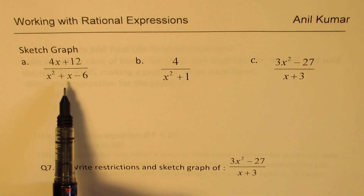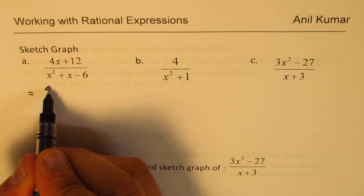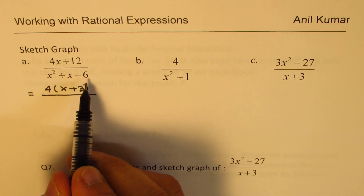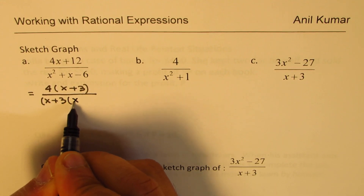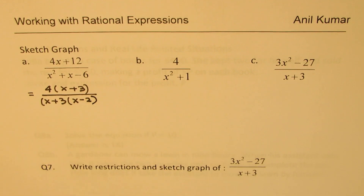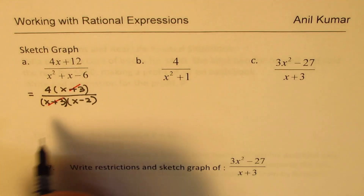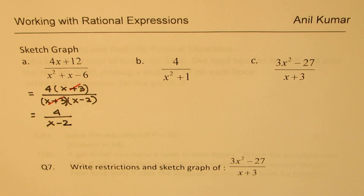The first one is (4x + 12) / (x² + x - 6). Our step is to factor the numerator and denominator. We get 4(x + 3) in the numerator. In the denominator, -6 means 3 times 2, giving (x + 3)(x - 2). We can cancel the common factor (x + 3), which leads to a hole since we have a common factor. This simplifies to 4 / (x - 2).